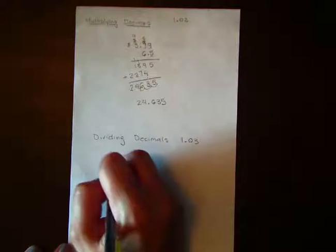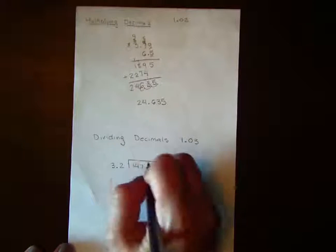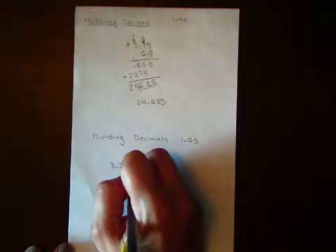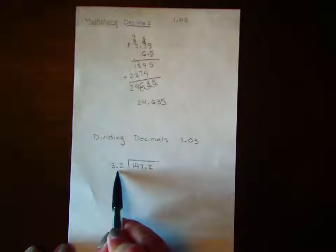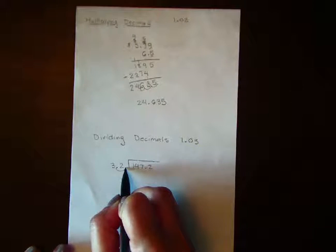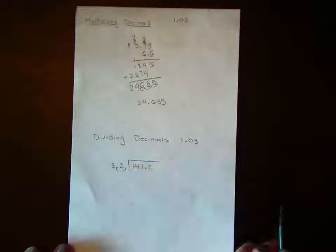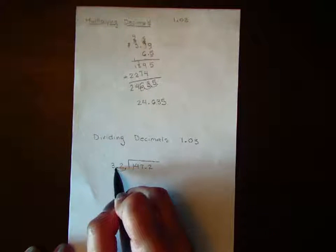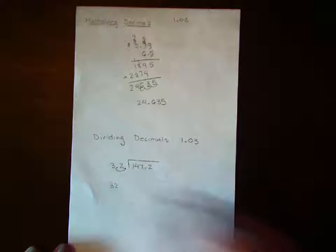Let's say if we have 3.2 divided into 147.2. Now your divisor, you need to move the decimal place as many times to the right as you need to so that this becomes a whole number. So in this case with 3.2, I only need to move it one place. So this now becomes 32.